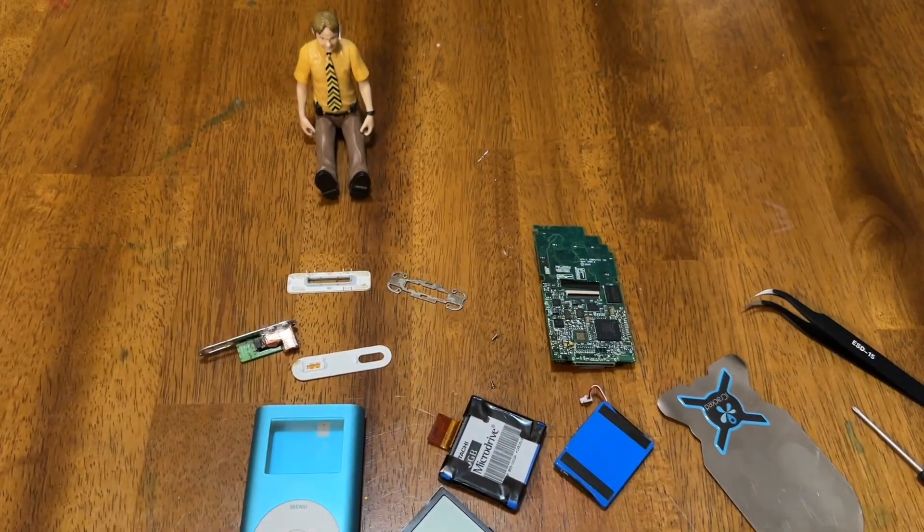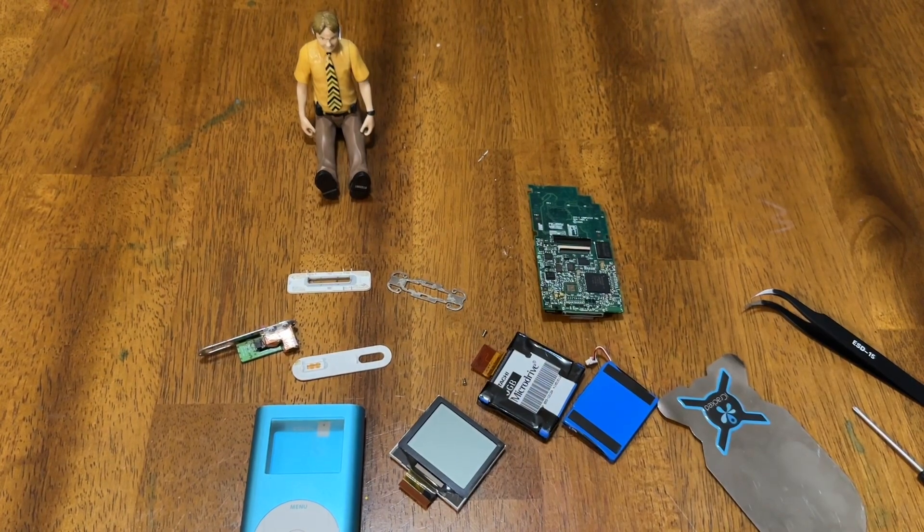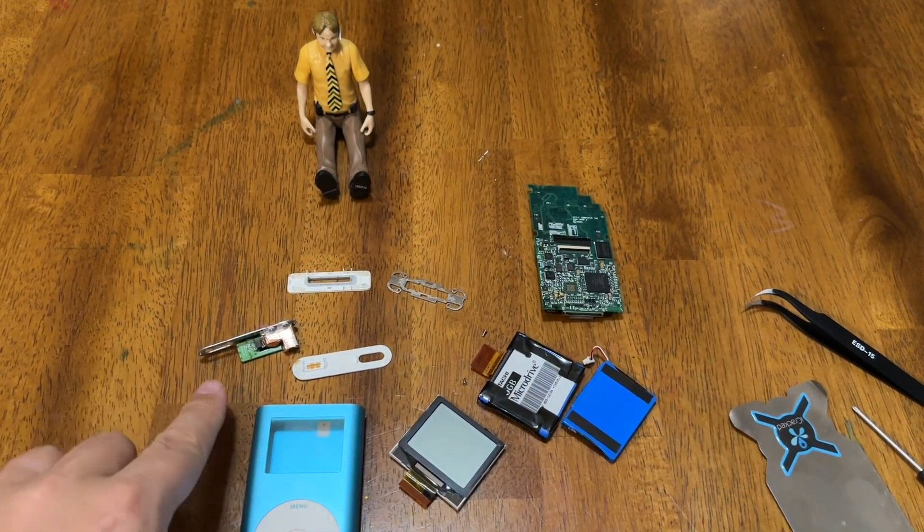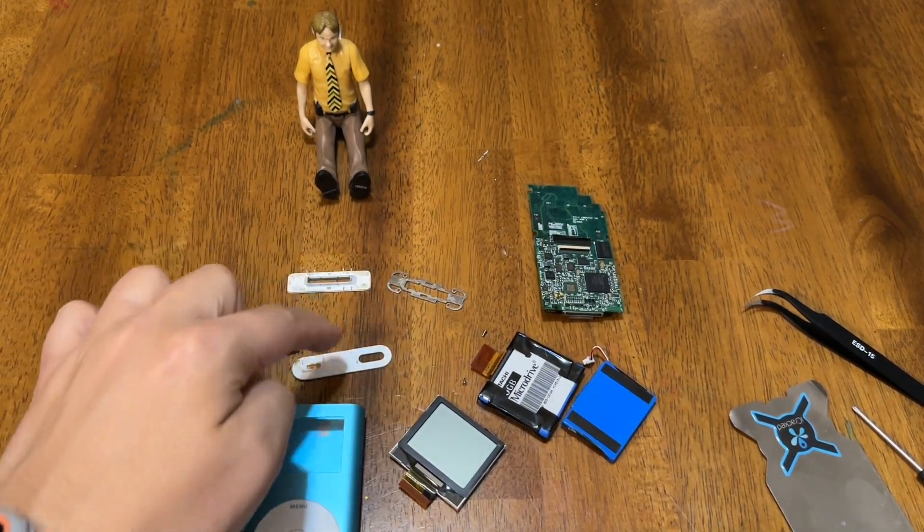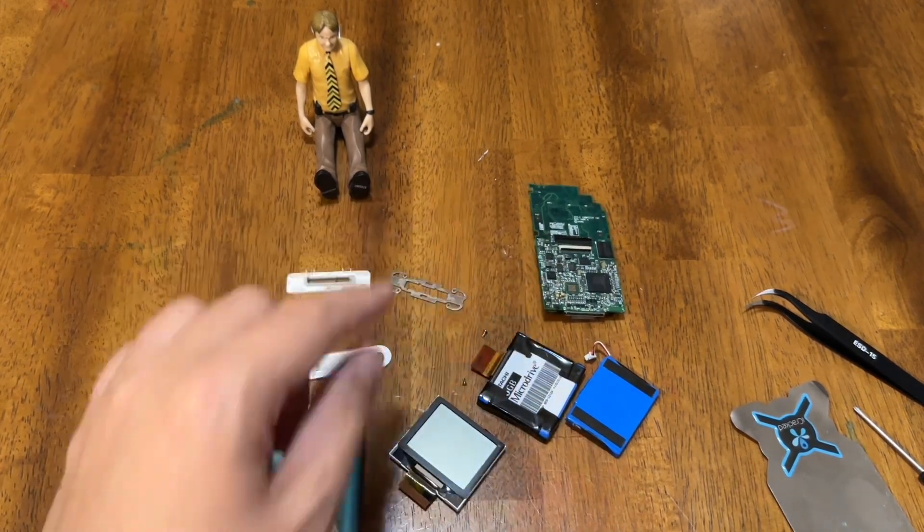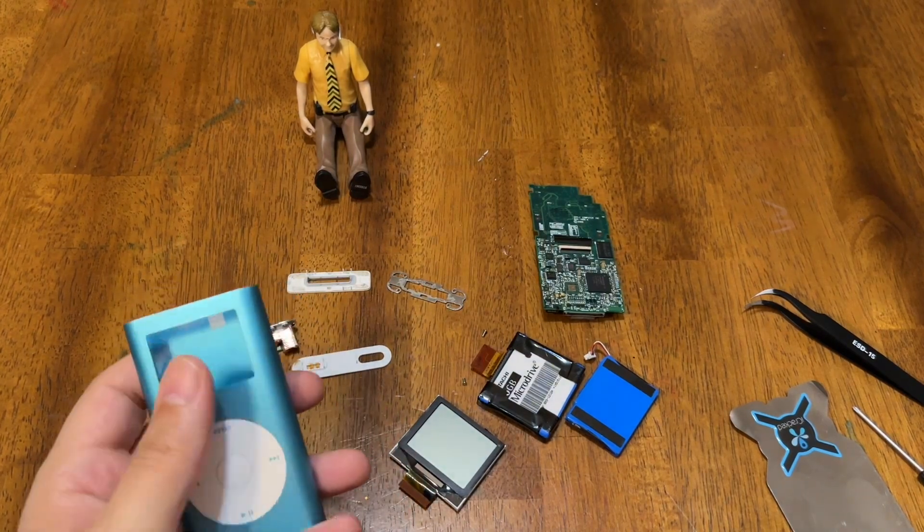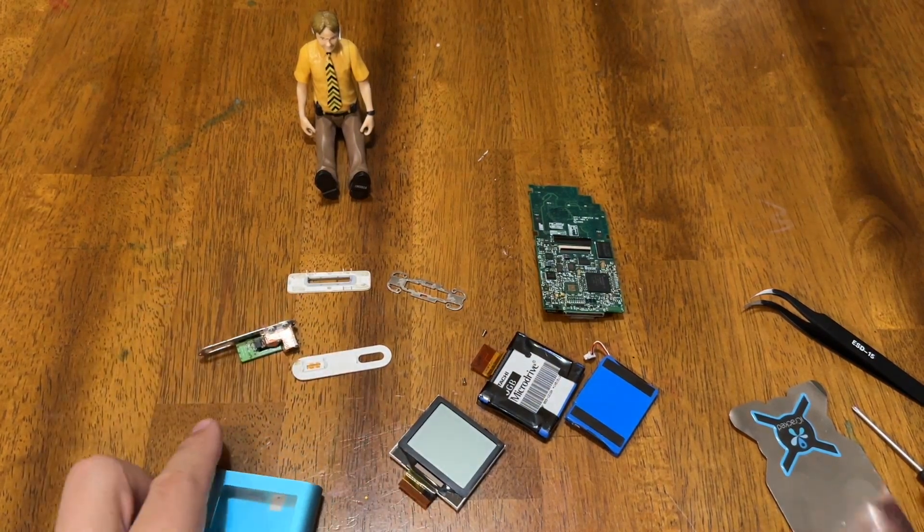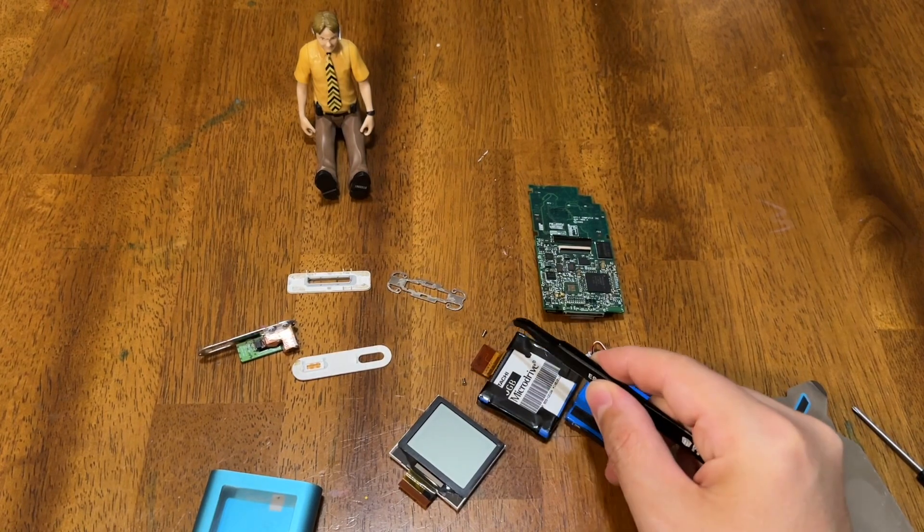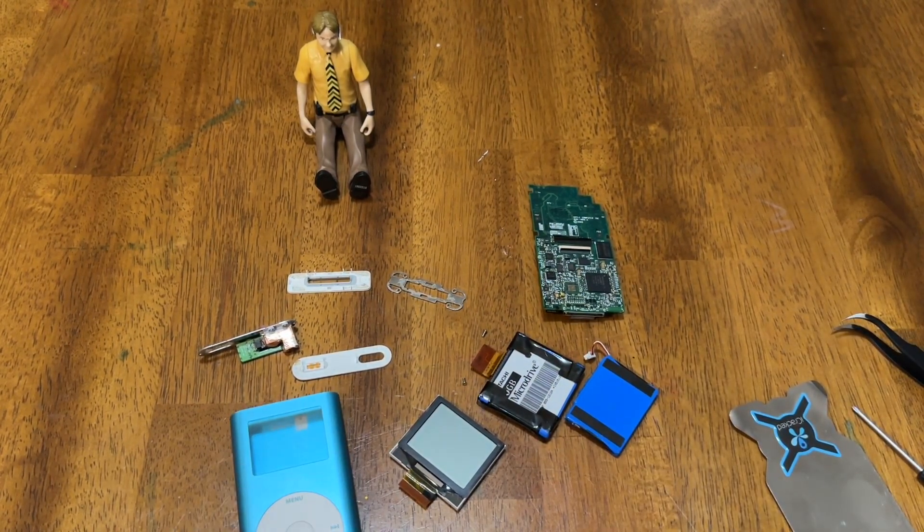So that's it. There's all the main components of an iPod mini second generation. So you've only got one, two, three, four, five, six, seven, eight, nine, ten. And then if you want to count the screws as separate, eleven and twelve. Twelve main components. That's all it is that makes this iPod up.